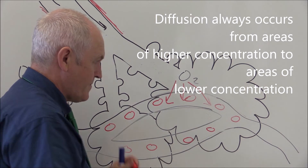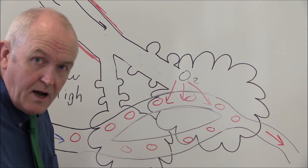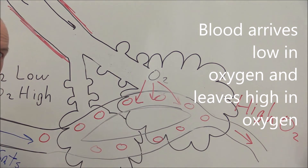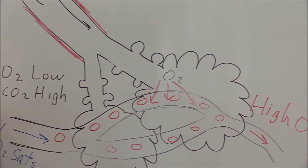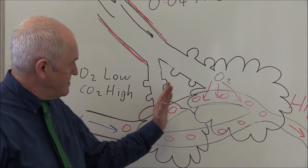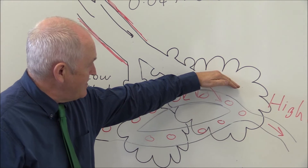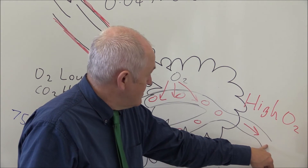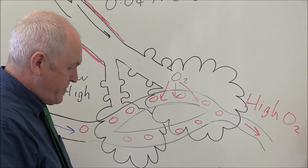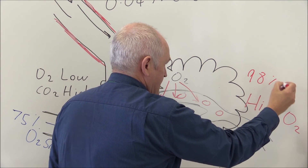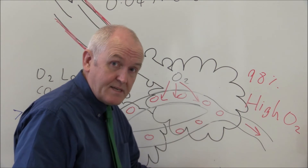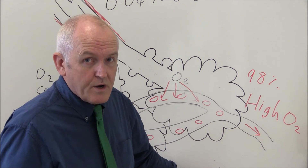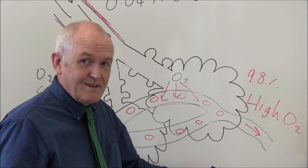Oxygen diffuses down its diffusion gradient from the alveolar air into the blood in the pulmonary capillary, meaning the blood leaving in the pulmonary vein is going to be high in oxygen. The blood arrived low in oxygen, passed through the pulmonary capillaries, and is now high in oxygen returning to the left side of the heart — typically about 98% saturated. If you take a few deep breaths you can get that up to 100% saturation, meaning your lungs could not be working more efficiently.